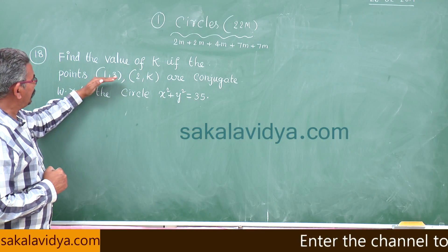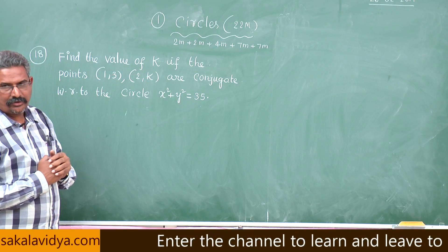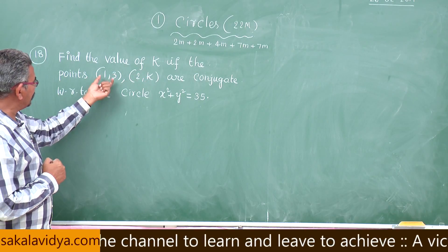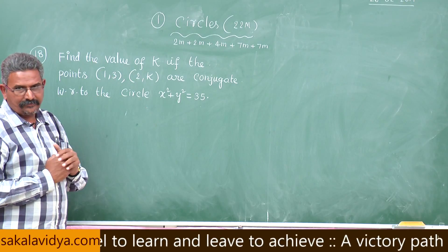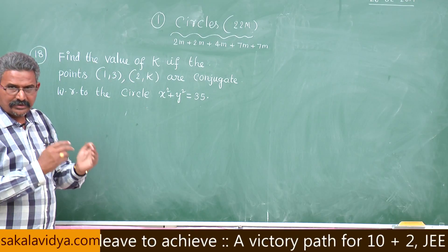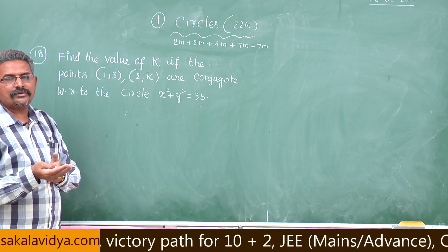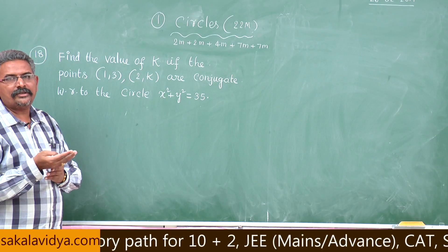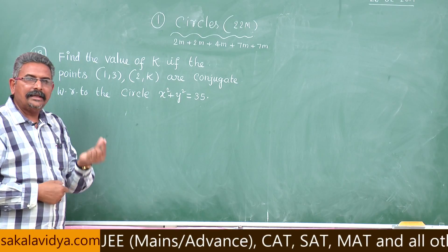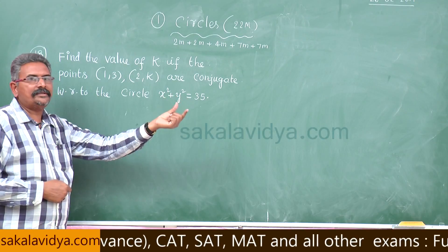In the given conjugate points, one of the coordinates is not given. Since these two points are already conjugate with respect to the circle s = 0, s₁₂ must be 0. s₁₂ means x₁x₂ + y₁y₂ - r² = 0. In this case: x₁x₂ + y₁y₂ - 35 = 0.